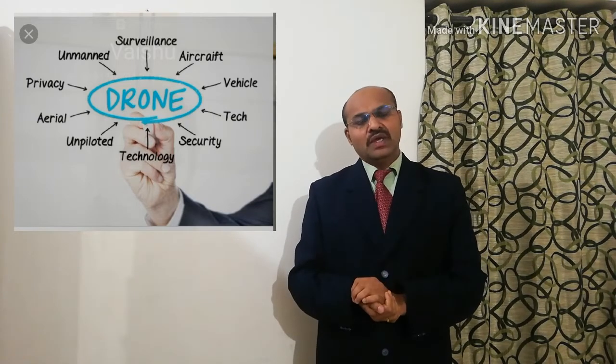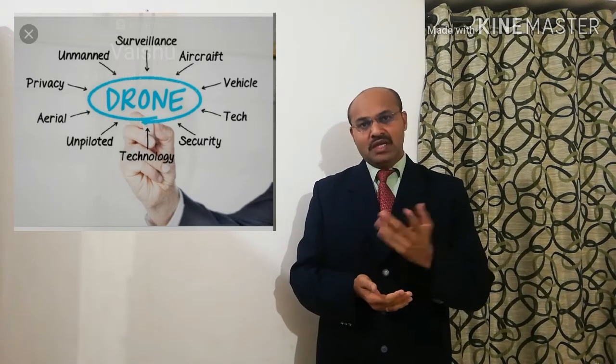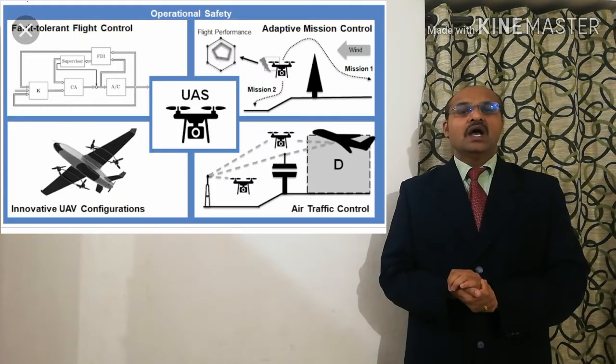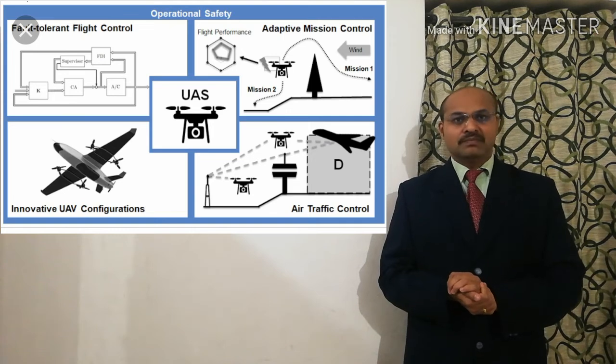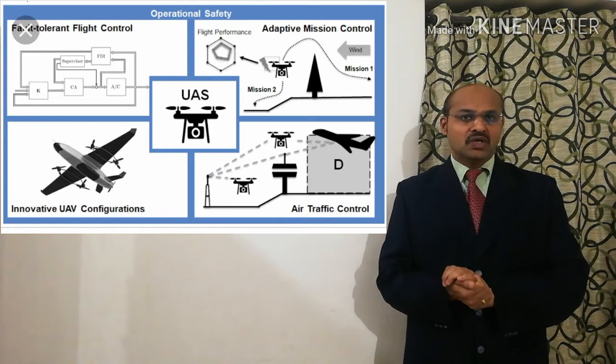Drone technology in India is called unmanned services — it is unmanned, meaning no human interference. Another name for drone technology is UAS — Unmanned Aerial System — which is a system that operates without human interference.